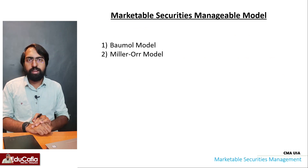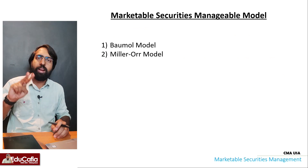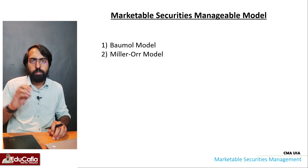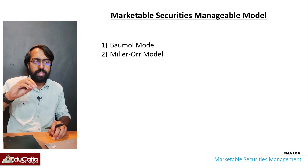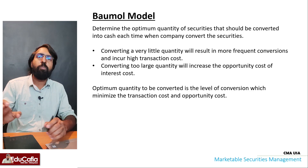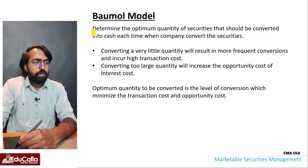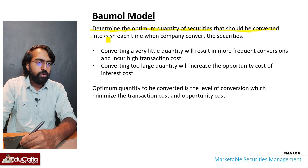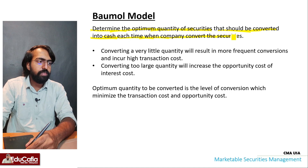There are two models to manage this. The first is the Baumol Model, and the second is the Miller-Orr Model. The Baumol Model determines the optimum quantity of securities that should be converted into cash each time the company converts securities.